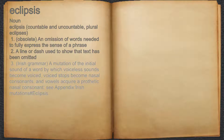3. Irish grammar: a mutation of the initial sound of a word by which voiceless sounds become voiced, voiced stops become nasal consonants, and vowels acquire a prosthetic nasal consonant. See Appendix: Irish Mutations — Eclipsis.